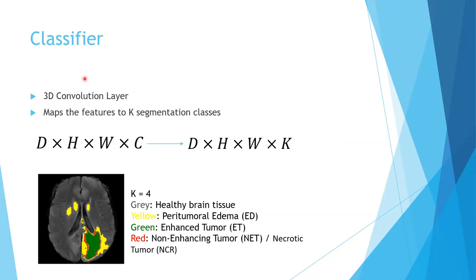At the end, we have a 3D convolution layer which maps the features to a K segmentation map. Each voxel represents a class. There are four classes in this dataset: the gray region represents healthy brain tissue, yellow shows peritumoral edema, green shows the enhanced tumor, and red shows the non-enhanced and necrotic tumor.